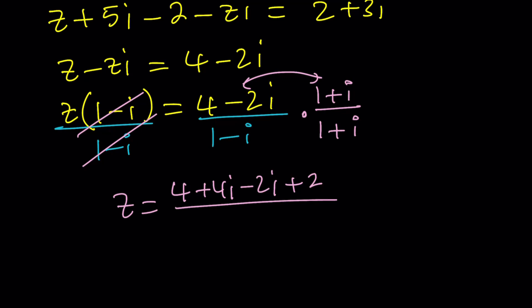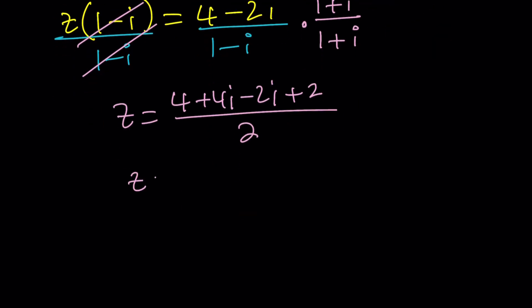Remember when you multiply z and z bar you get a squared plus b squared if z is equal to a plus bi, and that's the name of the channel. And you get sum of two squares not difference. And that's going to be a 2. 4 plus 2 is 6, so 6 plus 2i divided by 2 and that's going to give me 3 plus i for the value of z.